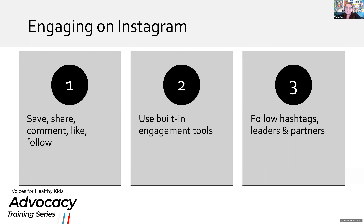Now engaging on Instagram — our big visual platform, which changes the rules of engagement for community management. Instagram has some very interesting built-in engagement tools that lend themselves well to success and product feedback community management models. Step one: use the tools — save, share, comment, like, follow. The save feature (the bookmark icon) currently has some of the highest value to the Instagram algorithm. If you see great content, press save to give them a boost, or encourage your followers to save your posts.